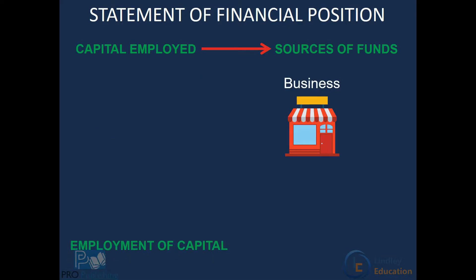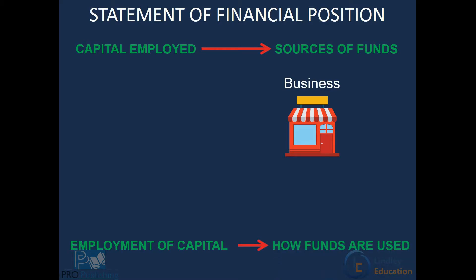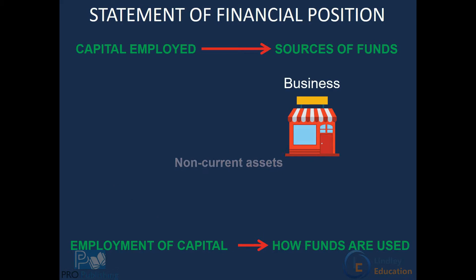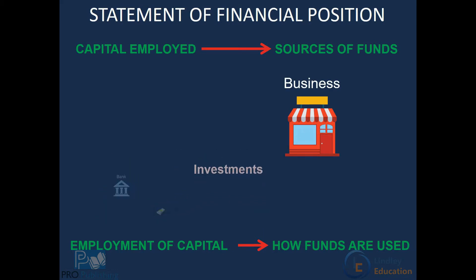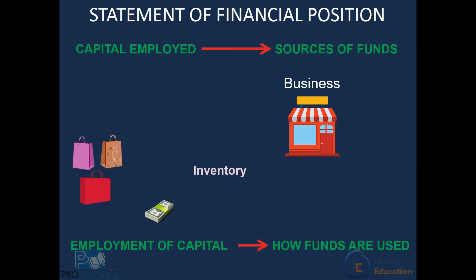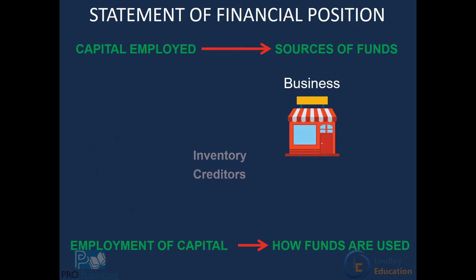The second section in our statement of financial position is our employment of capital, and this shows how the funds were used. The funds can be used in different ways. For instance, it can be used in purchasing of non-current assets. Also, it could be used to make investments, and it can be used to buy inventory or pay our creditors.